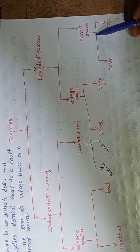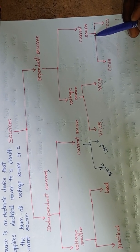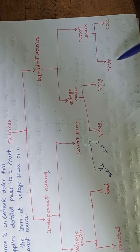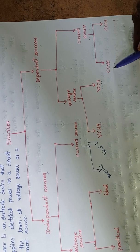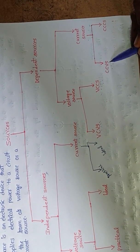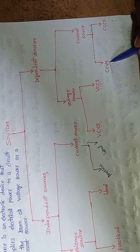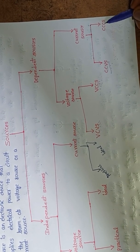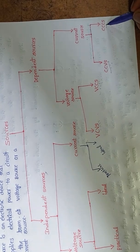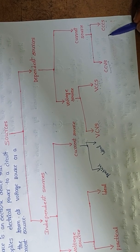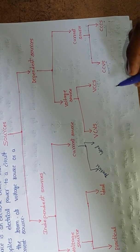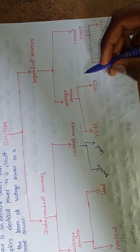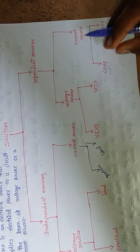Current sources in dependent sources are also classified into two types: current controlled voltage source, abbreviated as CCVS, and current controlled current source, abbreviated as CCCS. These four dependent source types — VCVS, VCCS, CCVS, and CCCS — will be discussed in later videos.